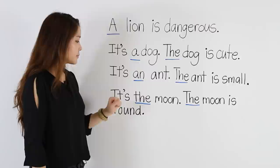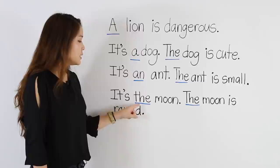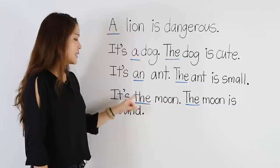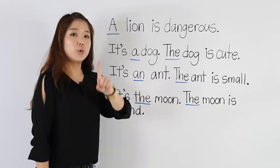And the last one: it's the moon. I have to say the moon because there's only one moon. I cannot say a moon. The moon — only one — is round.